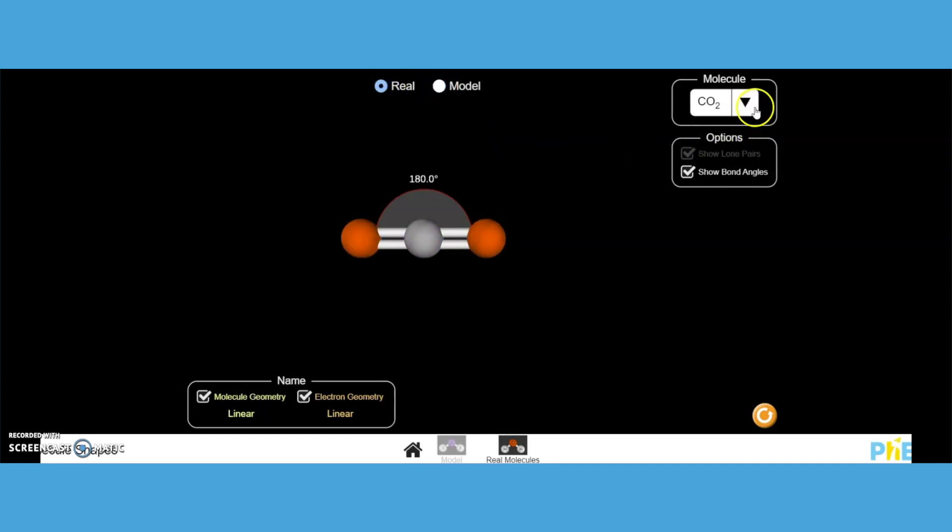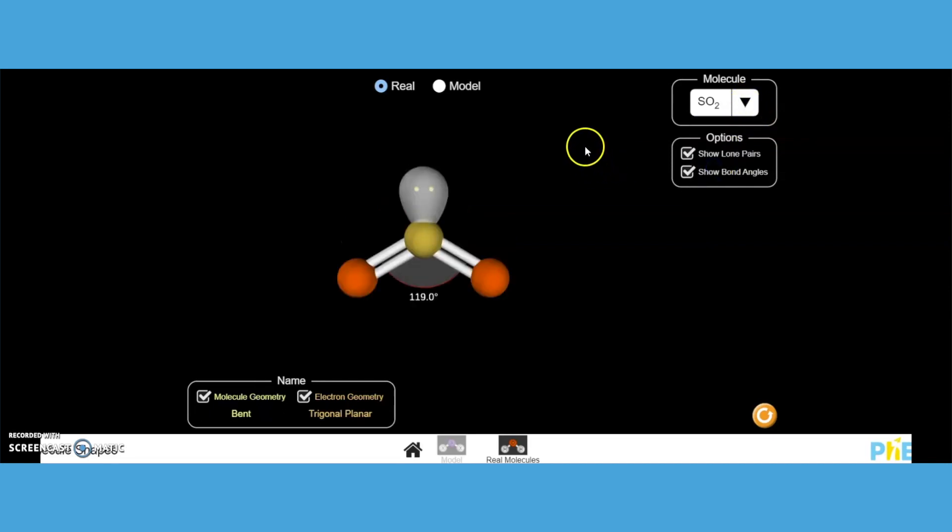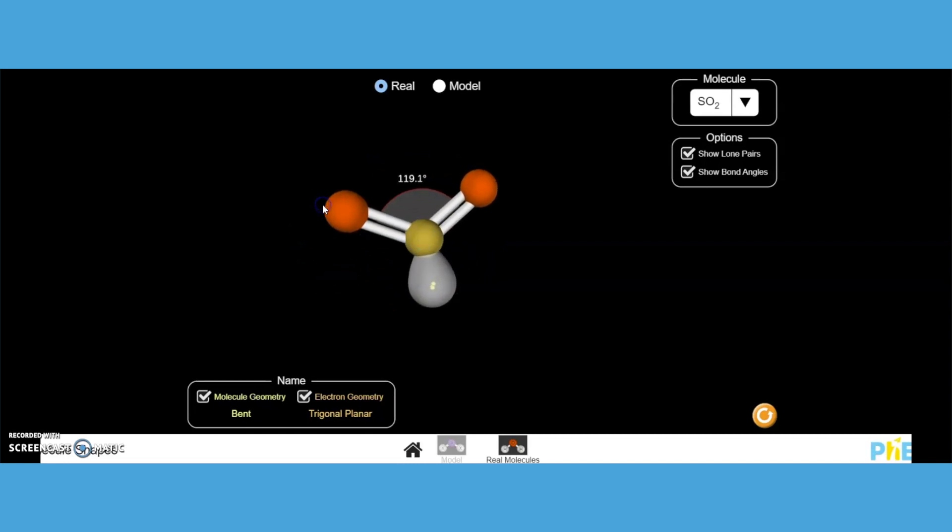The model version, remember, is in case you have a molecular model set. Some of the colors are a little different, and that's why the colors of the diagram are a little different. Here's sulfur dioxide. There's the real, here's the model, here's the real version.